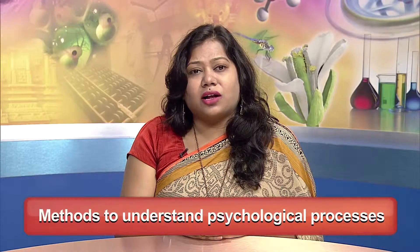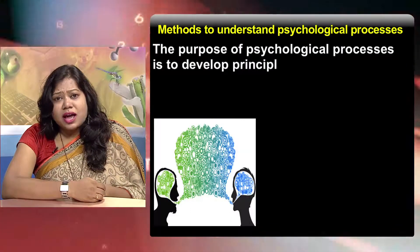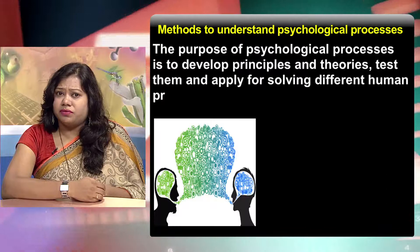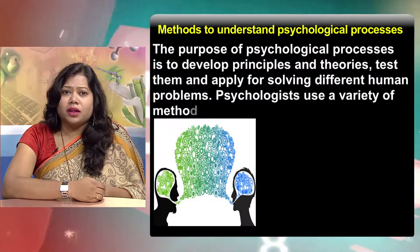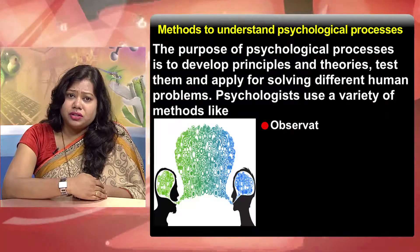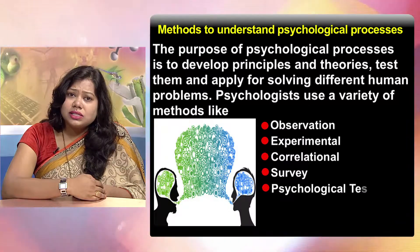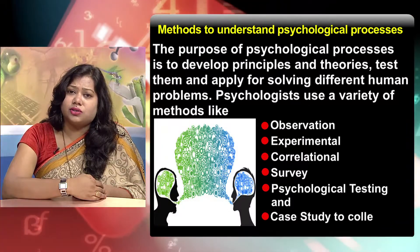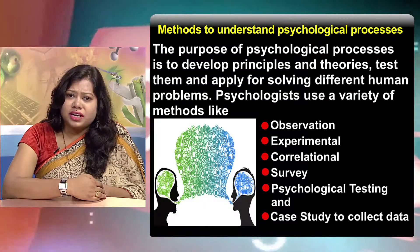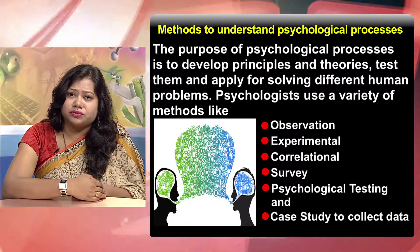Methods to understand psychological processes. In order to understand human behavior, various scientific methods are used. The purpose is to develop principles and theories, test them, and apply them for solving different human problems. Psychologists use a variety of methods like observation, experimental, correlational, survey, psychological testing and case study to collect data. The aim of this section is to guide you to select the methods which may be appropriate for different research.